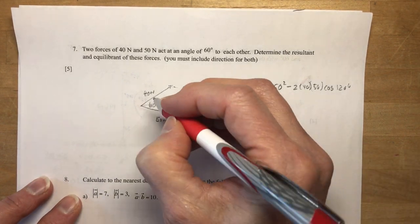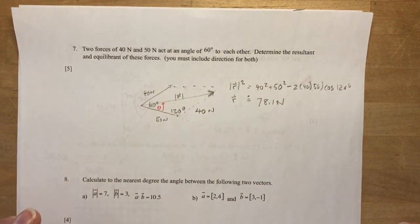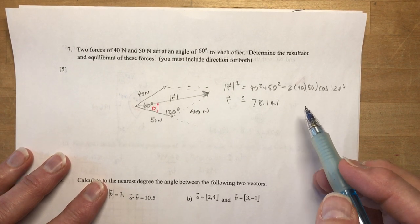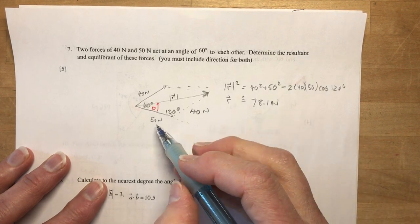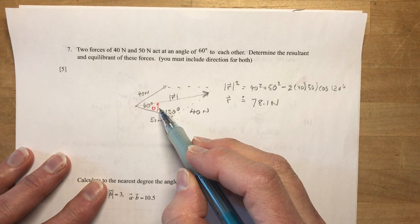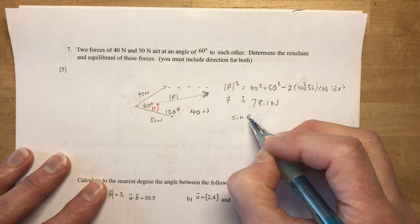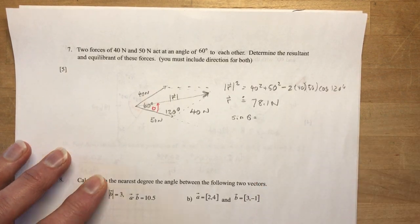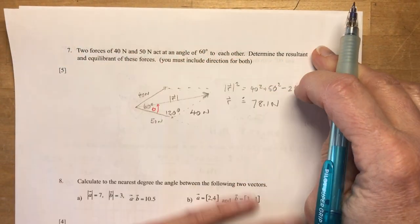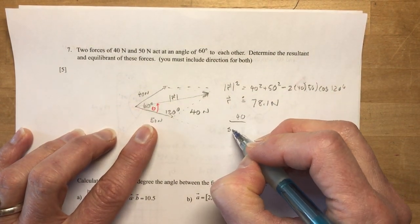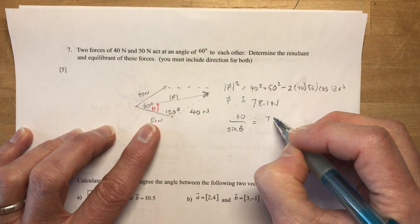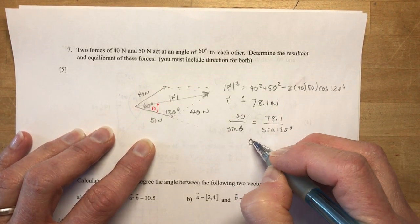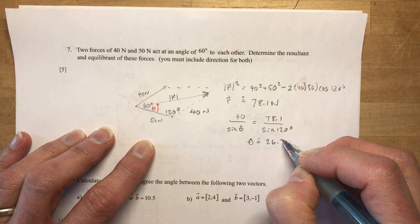Okay, so now I need to find theta, which is in here, because I need to know a direction. Determine the result. You must include direction for both. That was nice of me to tell them that because you should know by now that vectors need magnitude and direction. So to find this angle here, I can use sine law. So the sine of theta is going to be equal to, we have 40 newtons. I guess I could write it the long way first. I'm just going to give you the actual. So 40 over sine theta equals my resultant 78.1 over the sine of 120 degrees. And you can do the math on that. I'm not going to waste time, your time and mine. So about 26.3 degrees.